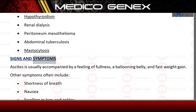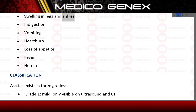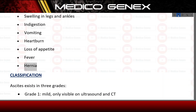Signs and Symptoms. Ascites is usually accompanied by a feeling of fullness, a ballooning belly, and fast weight gain. Other symptoms often include shortness of breath, nausea, swelling in legs and ankles, indigestion, vomiting, heartburn, loss of appetite, fever, and hernia.